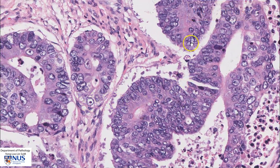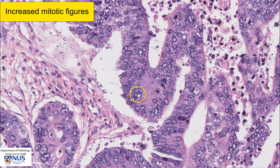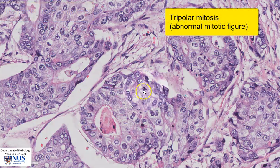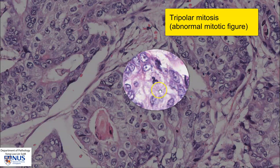We can also see scattered mitotic figures — there is a mitotic figure here, another one here. Sometimes the mitotic figures are abnormal, for example tripolar mitotic figures. Here is an example of a tripolar mitotic figure that somewhat resembles the Mercedes-Benz logo.